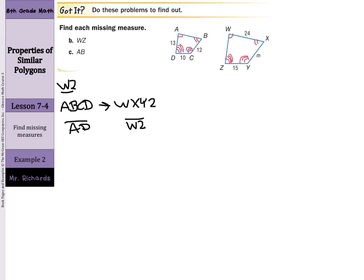So what we need to do is find the scale factor how we get from ABCD to WXYZ. Let's pick a side that we do know, such as YZ, and we can compare that to CD. YZ is 15, CD is 10, and that simplifies into 3 halves. So when I go from ABCD to WXYZ, I need to multiply by 3 halves.